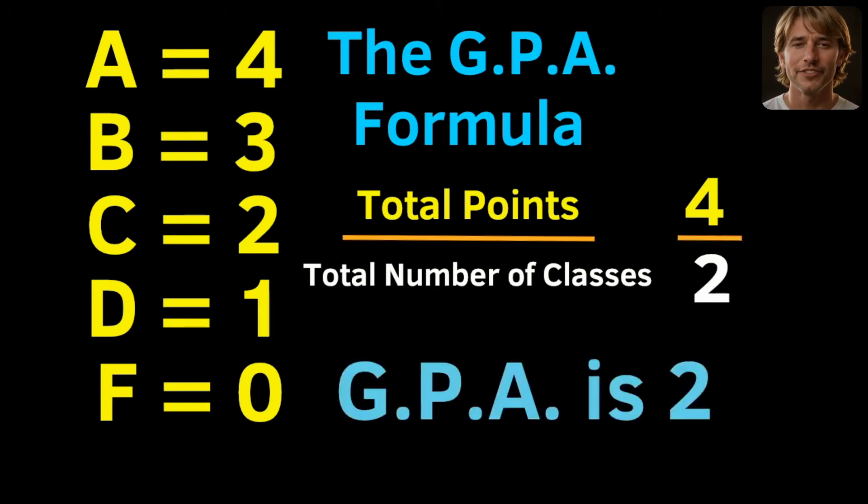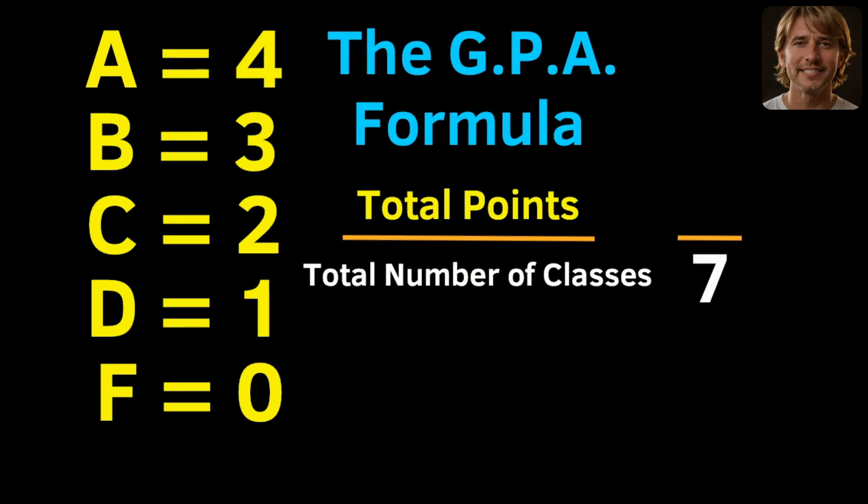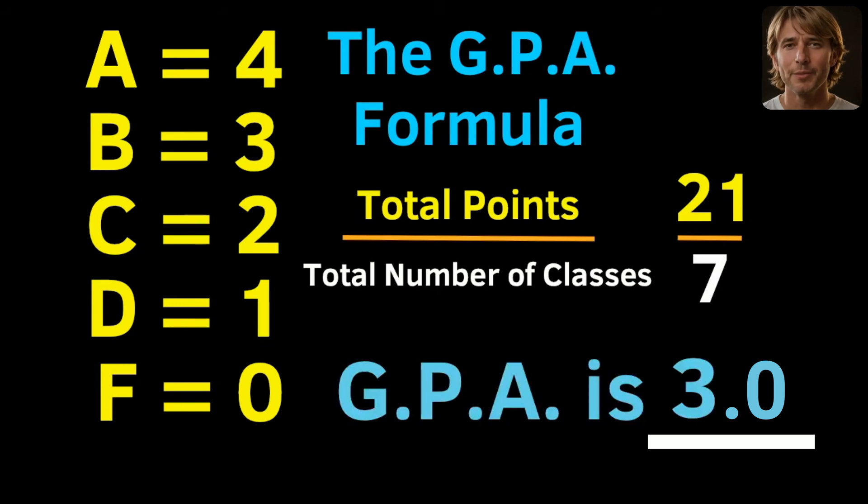Imagine the total number of classes is 7, and you earned 2 A's, 3 B's, and 2 C's, for a total of 21 points. Since 21 divided by 7 is 3, the GPA would be 3.0.